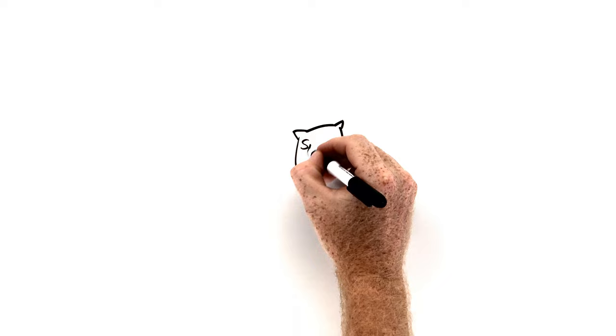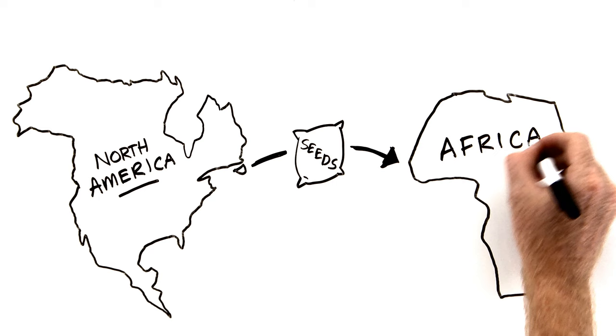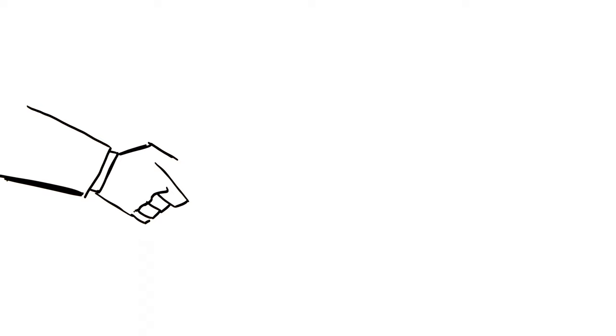But it's not as if we can take the seeds and equipment that seem to work on North American farms and simply give them away to African farmers. This doesn't work because African soils, cultures, and communities are totally different than in North America or Europe. So scientists must partner with farmers to develop locally appropriate solutions to local challenges.